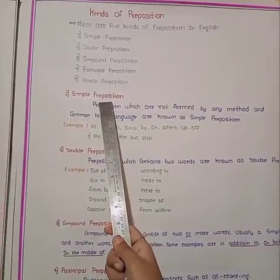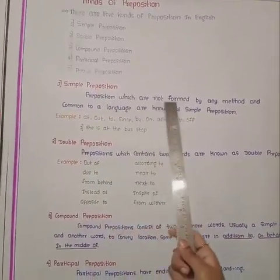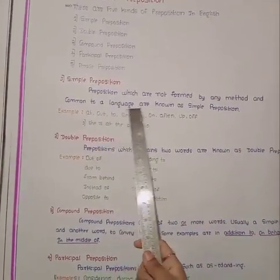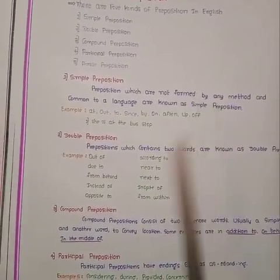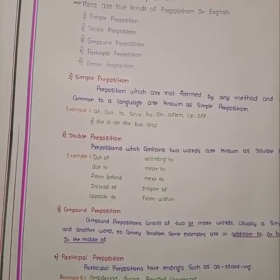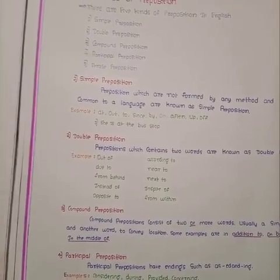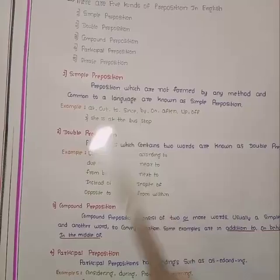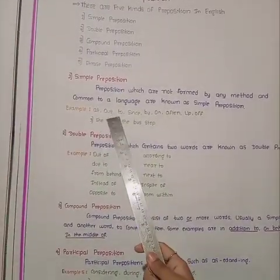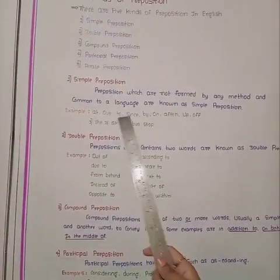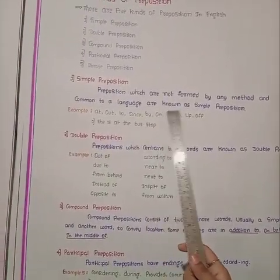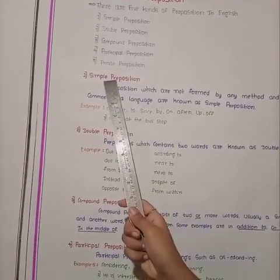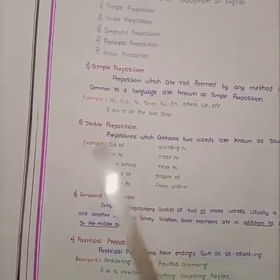First one: Simple preposition. Prepositions which are not formed by any method and common to a language are known as simple prepositions. It means a preposition not formed by any method and common to a language is called simple preposition. Examples: At, Out, To, Since, By, On, Often, Up, Of. These are examples of simple preposition.